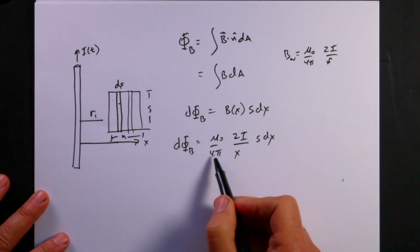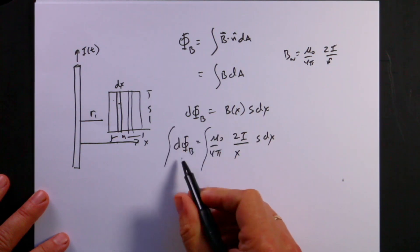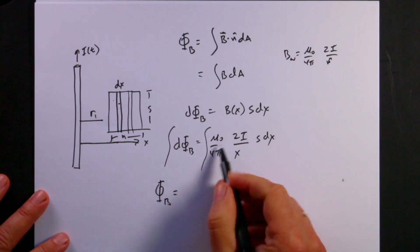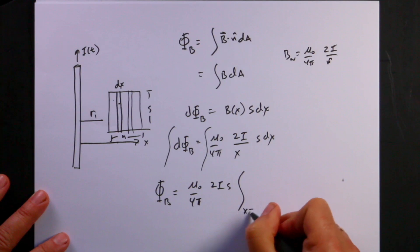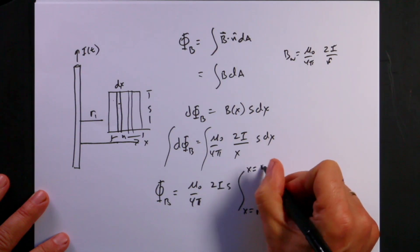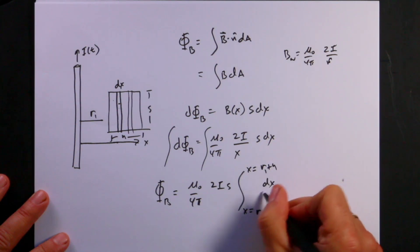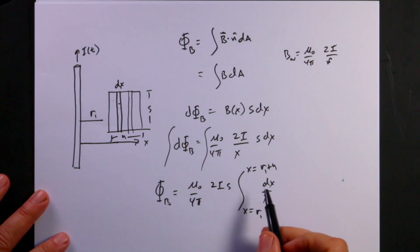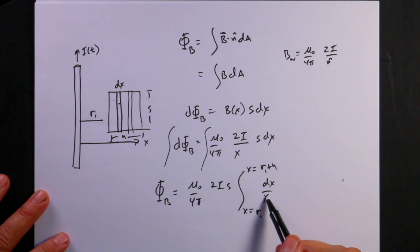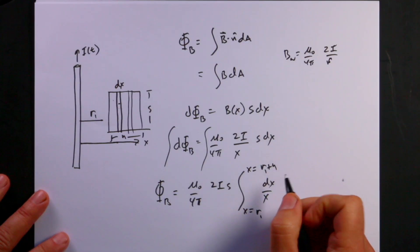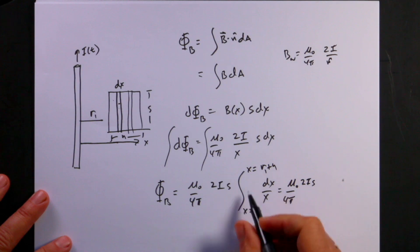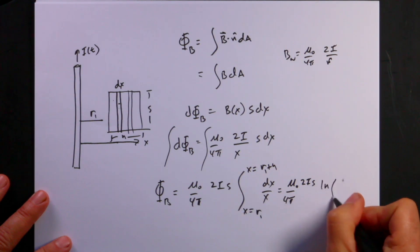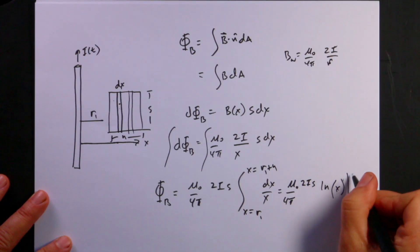The only variable changing between strips is x, so I can integrate both sides to get the total flux. The total flux equals (mu-naught/4pi) · 2i · s times the integral from x = r₁ to x = r₁ + h of dx/x. The integral of dx/x is the natural log, so I get (mu-naught/4pi) · 2i · s · ln evaluated from r₁ to r₁ + h.